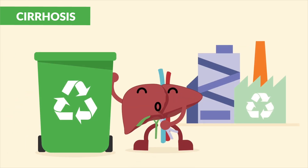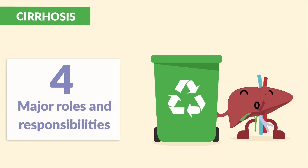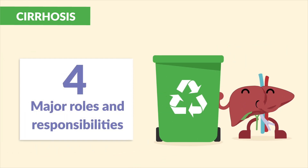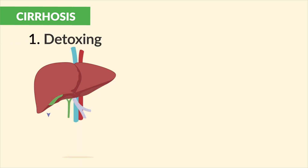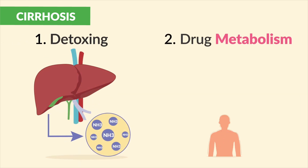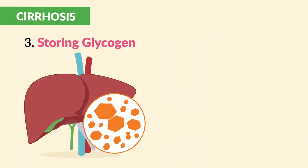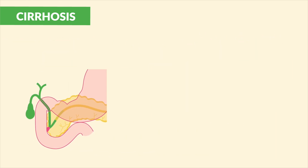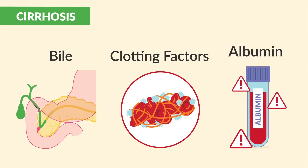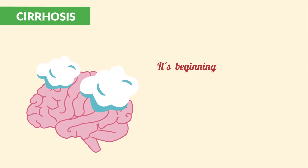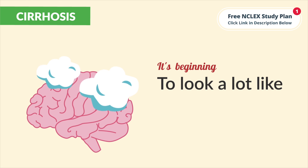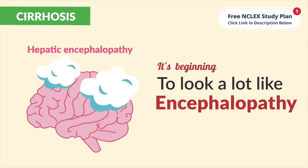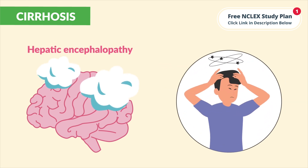The liver acts like a recycling company with major roles and responsibilities: detoxing ammonia and drug metabolism, storing glycogen, producing bile, clotting factors, and albumin. It's beginning to look a lot like encephalopathy, with altered LOC.